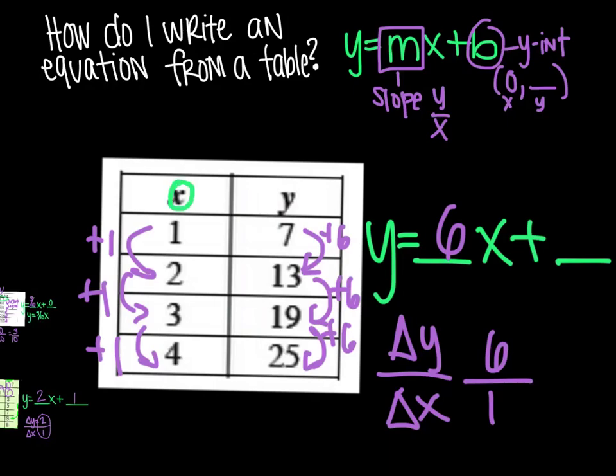So you just kind of have to imagine there was a 0. So we're going to bump this up a little bit, x and y. So here's x is 0. If I continue this pattern, you kind of have to think backwards. So if I would subtract 1, that would bring me to 0, which is what I want. And then I would have to work backwards here, too. So instead of adding 6, I would subtract 6. Which 7 minus 6 is 1. So my coordinate here is 0, 1. Which means the b term is going to be plus 1. So y equals 6x plus 1 would be the equation for this table.